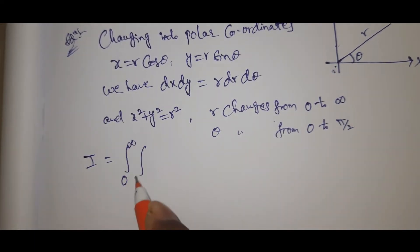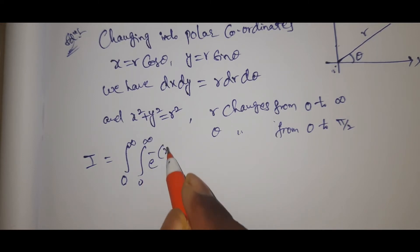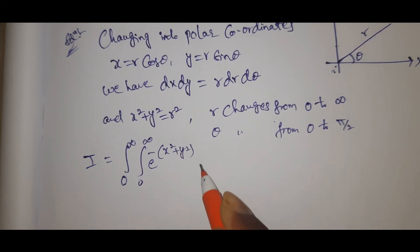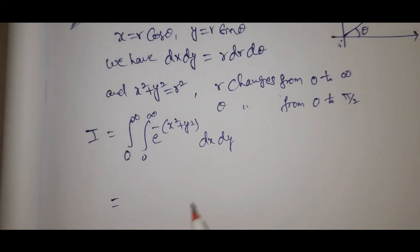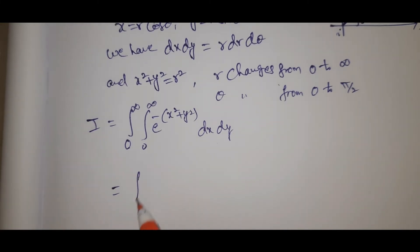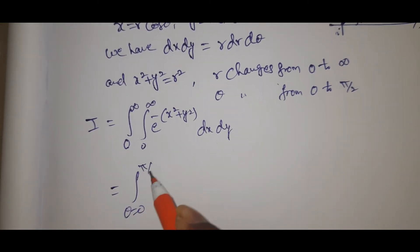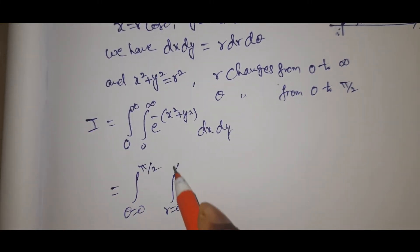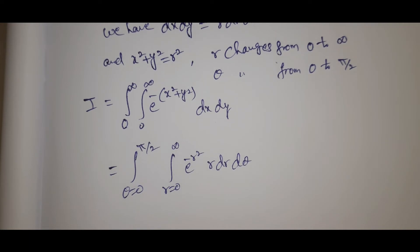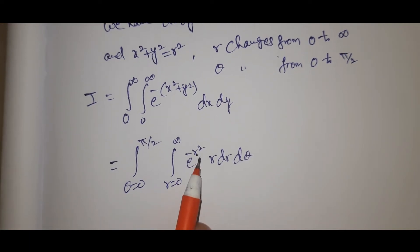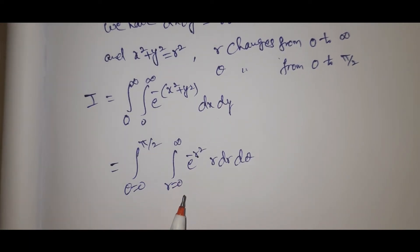I equals integral 0 to infinity, integral 0 to infinity, e power minus x square plus y square, dx dy. Now we change the Cartesian formula into polar. Theta equal to 0 to pi by 2, r equal to 0 to infinity, e power minus r square, r dr d theta.